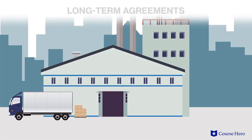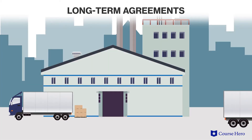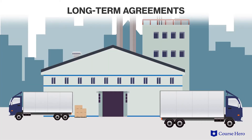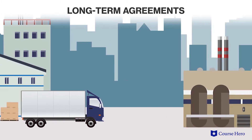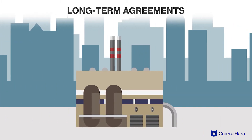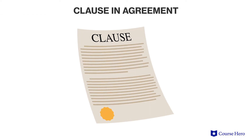When existing firms have long-term agreements with suppliers of production inputs and distributors of the product, newcomers may not be able to break into the supply and distribution chain easily, especially when such an agreement includes a clause that explicitly prohibits suppliers from working with other customers.